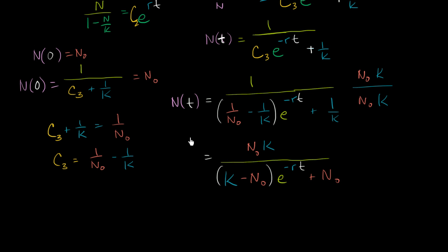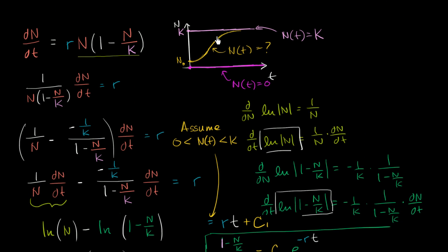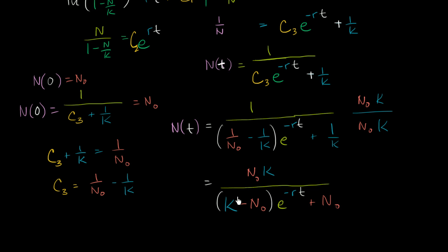And there you have it — we have found a solution for the logistic differential equation. We call this the logistic function. In future videos we'll explore it more, and if you plot it — on Wolfram Alpha or a graphing calculator — you'll see it has exactly the right properties: it starts at n₀, increases at increasing rates, then slows down as we approach the maximum population k. It's a very neat function for modeling population growth.